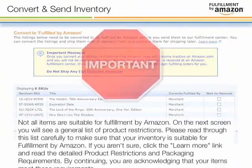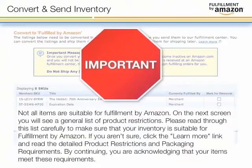Not all items are suitable for Fulfillment by Amazon. On the next screen you will see a general list of product restrictions. Please read through this list carefully to make sure that your inventory is suitable for Fulfillment by Amazon. If you aren't sure, click the Learn More link and read the detailed product restrictions and packaging requirements. By continuing, you are acknowledging that your items meet these requirements.